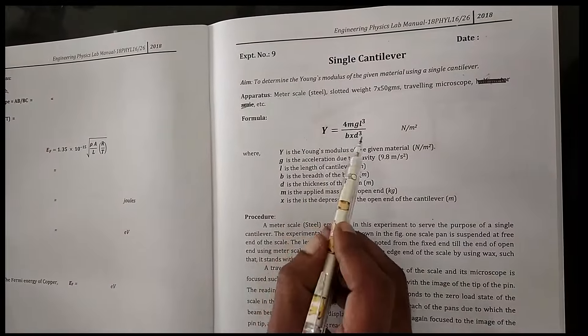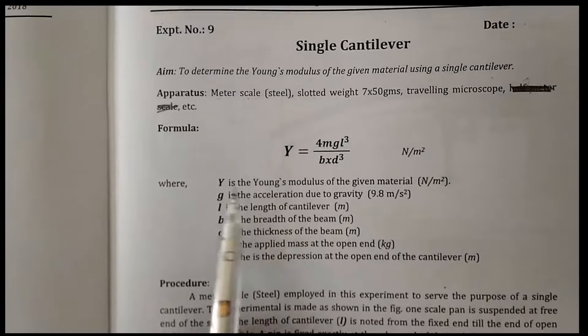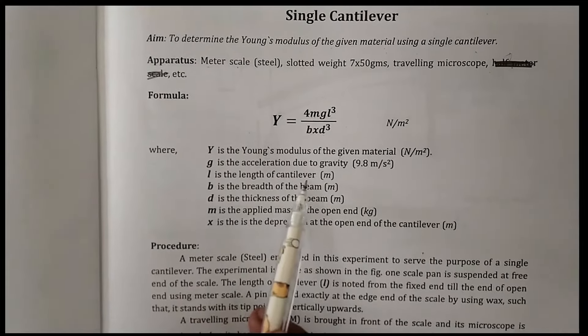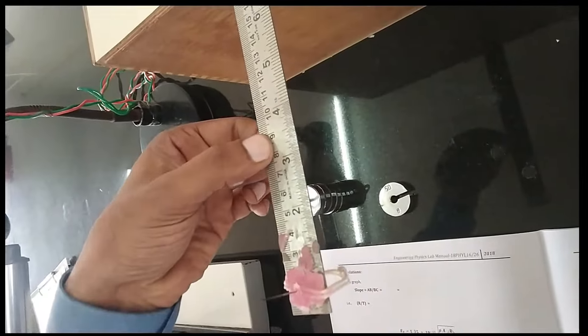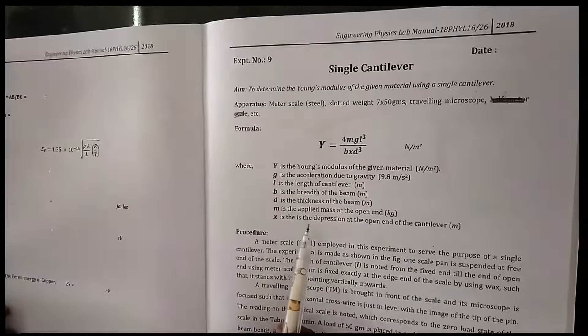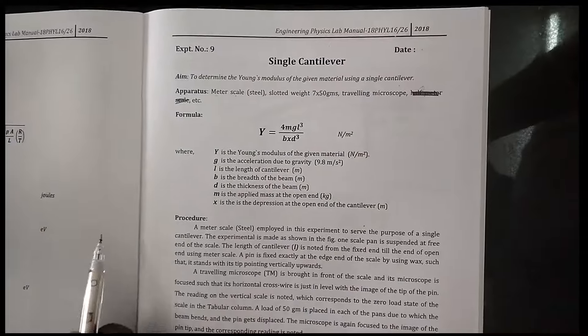To find the Young's modulus, we are using this formula: Y is equal to 4MGL³ divided by BD³, where Y is the Young's modulus of the given material, G is the acceleration due to gravity, L is the length of the cantilever, B is the breadth of the cantilever, D is the thickness of the cantilever, M is the applied mass at the free end, and X is the depression at the free end due to load.